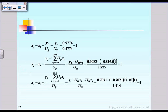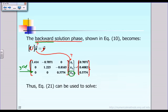Using the formula developed earlier and substituting the numerical value for Y3 and U33, we find that X3 equals 1. After solving for X3, we look at the second equation and solve for X2. Then, from the first equation, we solve for X1.